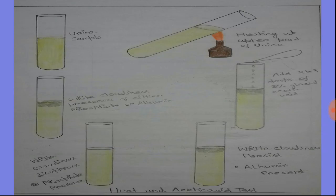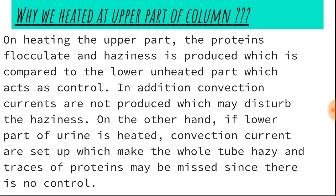As shown in the picture: look at the first sample where the tube is filled with urine, then the upper portion is heated by a lamp and a white cloudiness is present, due to phosphate or albumin. Then a few drops of three percent glacial acetic acid are added. The cloudiness in the left-side test tube disappears — this is because of phosphate. In the right-side test tube, the cloudiness still persists after adding three percent glacial acetic acid — that is albumin. That is the main reaction of the heat and acetic acid test.